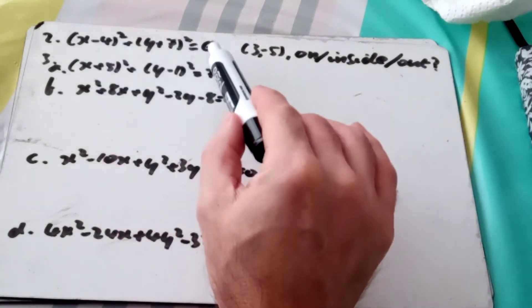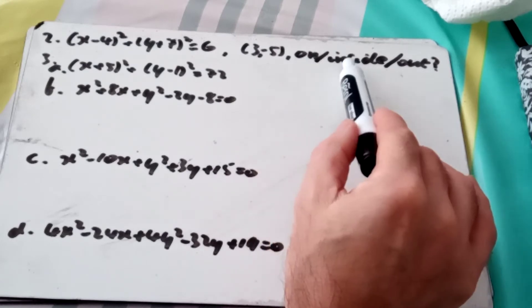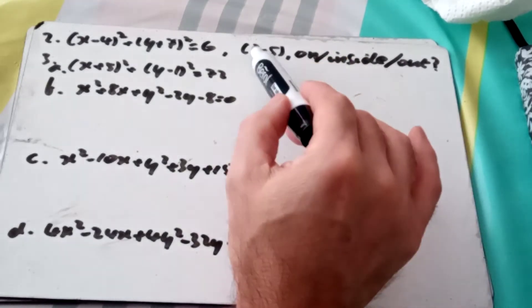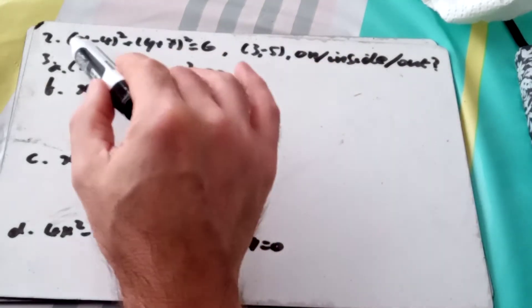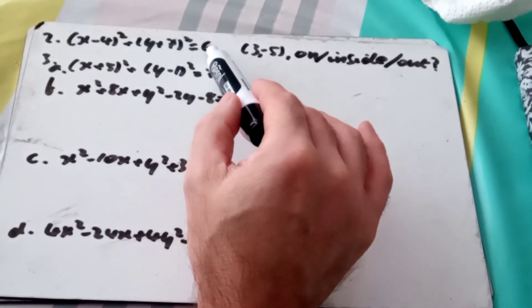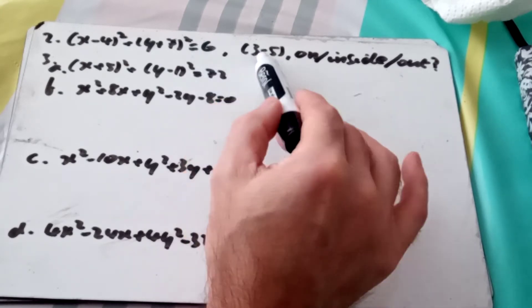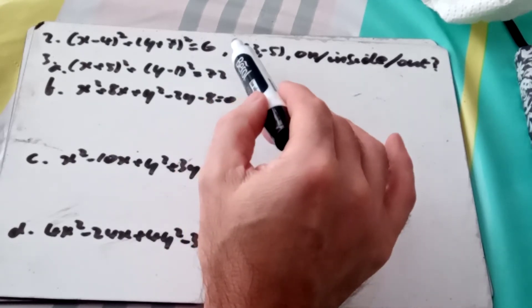So, question 2 is, here's the equation of a circle, here's a point, and we're asked, is it on the circle, inside the circle, or outside the circle? All I have to do is stick in the x and y values into the left-hand side of it. If the answer is equal to 6, then that point is on the circle. If it's less than 6, this point is inside it, and if it's bigger than 6, it's outside it.